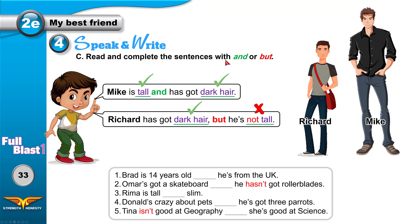Read and complete the sentences with 'and' or 'but.' Brad is 14 years old and he is from the UK — similar ideas, so 'and.' Umar's got a skateboard but he hasn't got rollerblades — opposites, so 'but.' Rima is tall and slim. Donald's crazy about pets and he's got three parrots. Tina isn't good at geography, but she is good at science — opposite ideas.